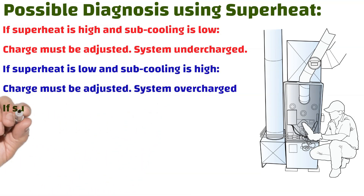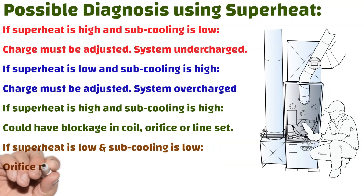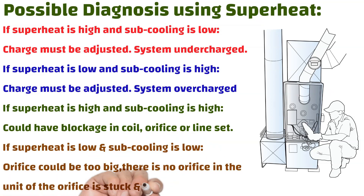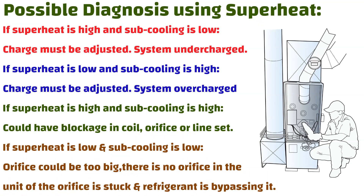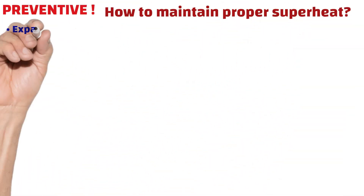Possible diagnosis using superheat: if superheat is high and sub-cooling is low, the charge must be adjusted — system is undercharged. If superheat is low and sub-cooling is high, the charge must be adjusted — system is overcharged. If superheat is high and sub-cooling is high, there could be a blockage in the coil, orifice, or line. If superheat is low and sub-cooling is low, the orifice could be too big, there is no orifice in the unit, or the orifice is stuck and refrigerant is bypassing it.